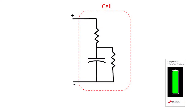Self-discharge in lithium-ion cells can be electrically modeled using a simple cell model, as shown in this illustration. C-effective is the effective capacitance of the cell, storing the cell's charge. This effective capacitance is typically hundreds or thousands of farads.